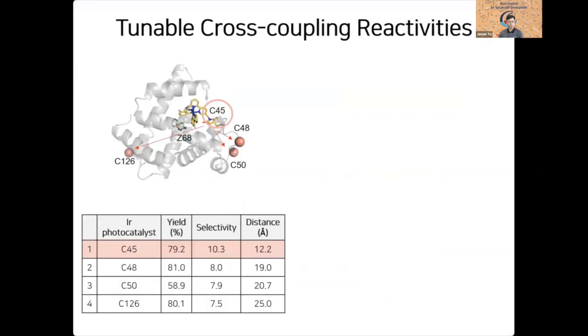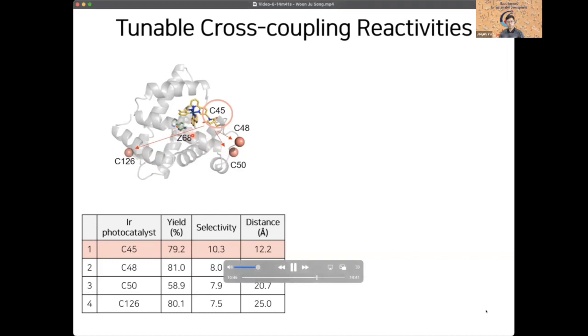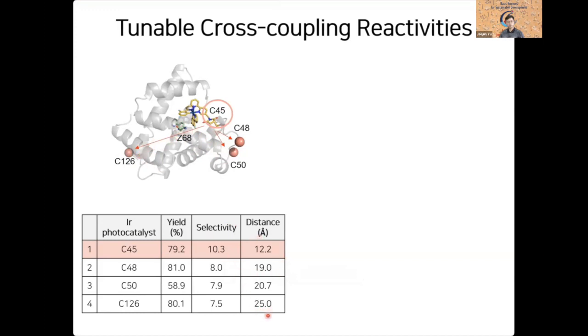In addition, we can modulate the chemical reactivity of artificial biocatalysts by redesigning the protein sequence. Initially, we had iridium catalyst at C45 position and the nickel bipyridyl catalyst at this 68 position. But now we can shift the position of this iridium catalyst all the way to 126 position. As we are moving the location of this iridium catalyst, we are basically changing the distance between these two inorganic catalysts. As we are moving far away from the initial positions, the distance becomes longer, and as the distance between the iridium catalyst and the nickel catalyst gets longer, the selectivity goes down, indicating that this photocatalytic cross-coupling reaction requires efficient electron transfer between these two catalysts.